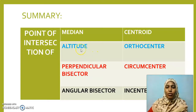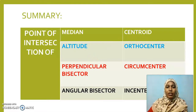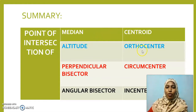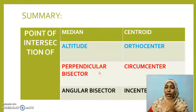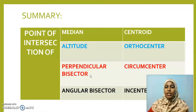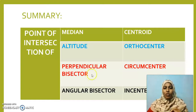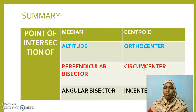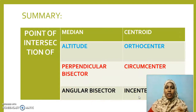Then we learnt about altitude — it is the line segment which is perpendicular from the vertex to the opposite side. All these altitudes meet at a point called the ortho center. Then we learnt about the perpendicular bisector — both are perpendicular, but here it bisects the opposite side. These 3 perpendicular bisectors meet at a point called the circumcenter. Then the angular bisector meets at a point called the incenter.